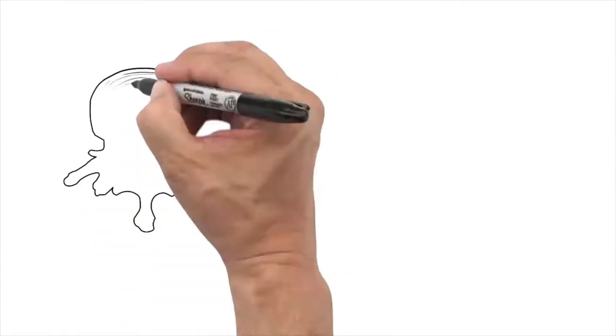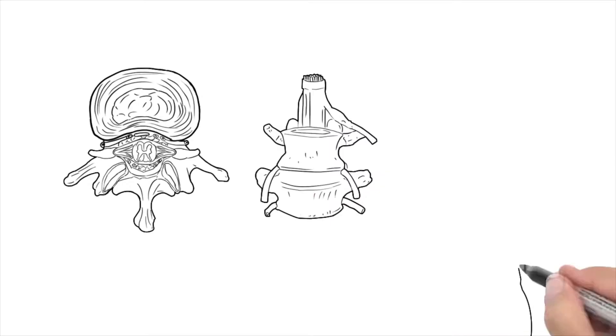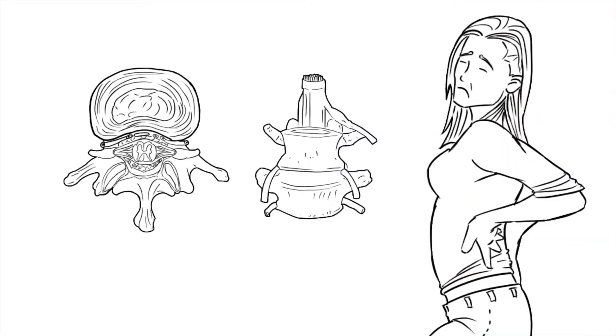With a dynamic disc model containing both an annulus and nucleus, realistic motion can be demonstrated explaining why, when, and where it hurts.